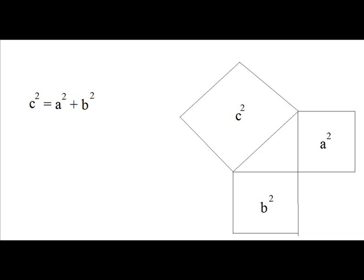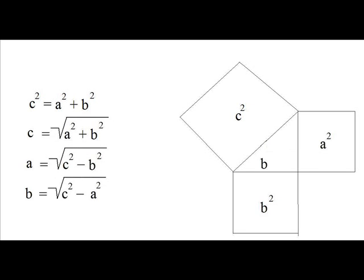Using these relationships we can solve for the hypotenuse C, the height A, or the base B. For example, if the hypotenuse has a length of 5, the height a length of 3, and the base a length of 4, then C squared equals 25, A squared equals 9, and B squared equals 16. Using these relationships, we can solve for any one of the sides of a right triangle.